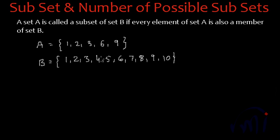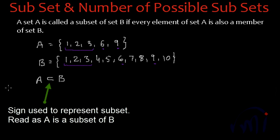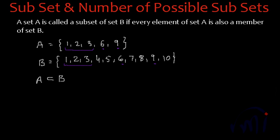This is a set of first 10 natural numbers. Then if we see properly all the elements of set A are there in set B. These first three elements are the first three elements of set B. Then we have a 6, 6 is over here, then we have a 9 and 9 is over here. Then this set A is called the subset of set B. A is a proper subset of set B because we have few more elements which are there in set B and not there in set A. So that is why this A is called the proper subset of set B.